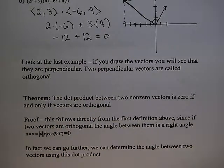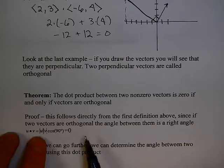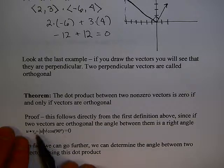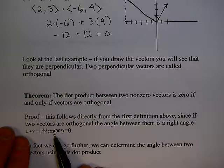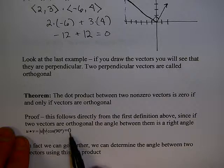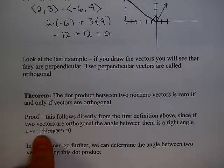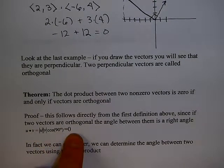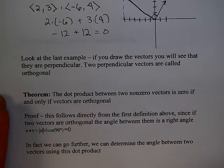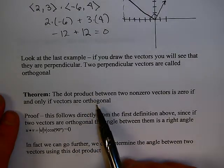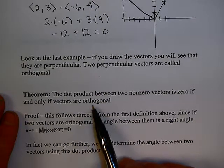Here's a theorem: the dot product between two non-zero vectors is 0 if and only if the vectors are orthogonal. Proof: this follows directly from the first definition. Since if two vectors are orthogonal, the angle between them is 90 degrees. So u dot v equals magnitude of u times magnitude of v times cosine 90, and cosine 90 is 0, so u dot v must be 0. Conversely, if u dot v is 0, then cosine theta equals 0, so theta must be 90 degrees.